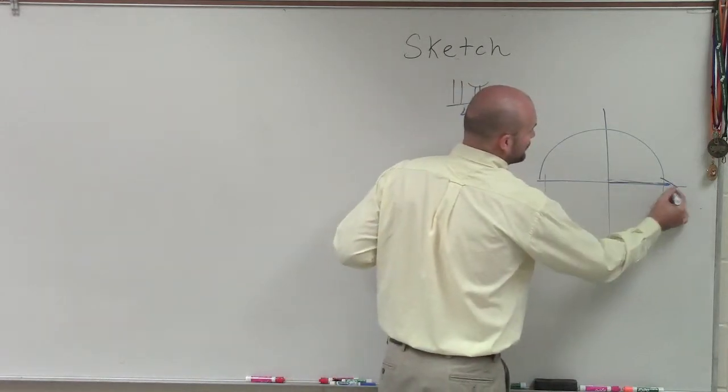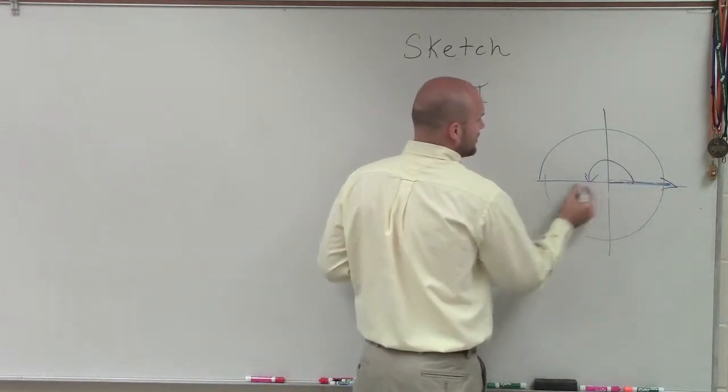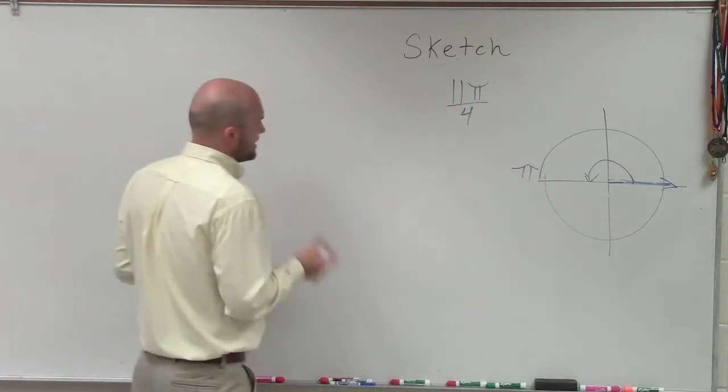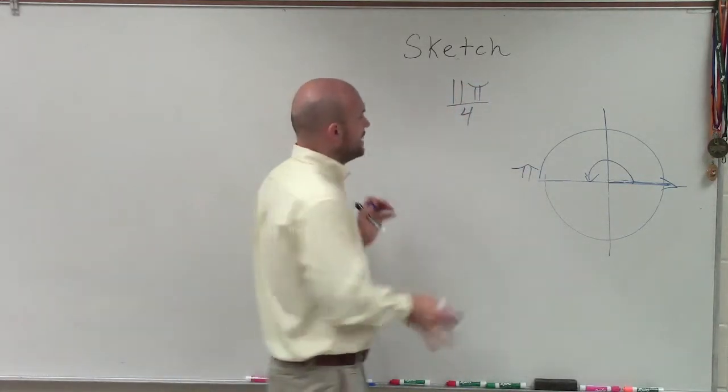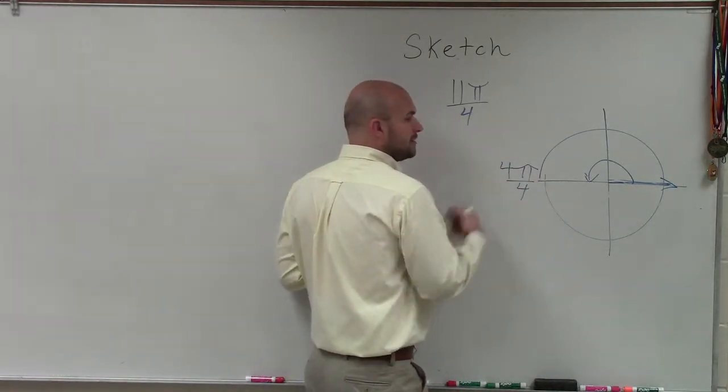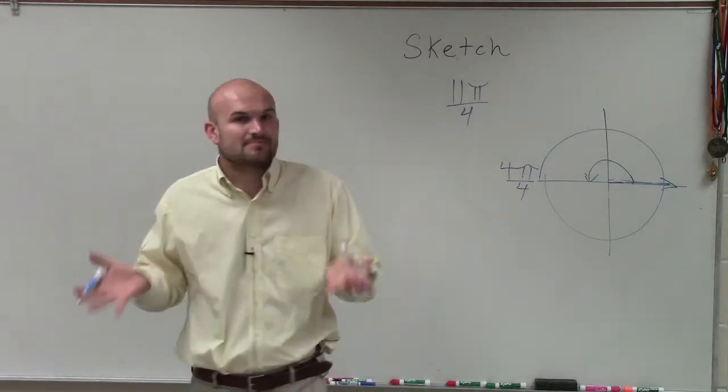So if we have our initial side, remember the rotation of a ray halfway around a circle is going to be π. But what I like to do when I'm sketching an angle is I always look at my denominator and say, well, halfway around a circle would be 4π over 4, because 4π over 4 is the exact same thing as π.